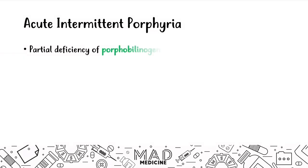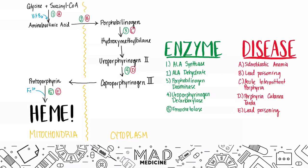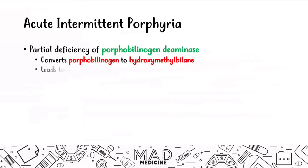Acute intermittent porphyria occurs due to a partial deficiency of porphobilinogen deaminase. This defective enzyme normally converts porphobilinogen to hydroxymethylbilane. When you block porphobilinogen deaminase, you decrease the production of hydroxymethylbilane, and that leads to an increase in porphobilinogen because porphobilinogen cannot move forward in the pathway to produce heme. This leads to a buildup of porphobilinogen and ALA.